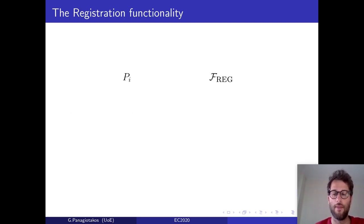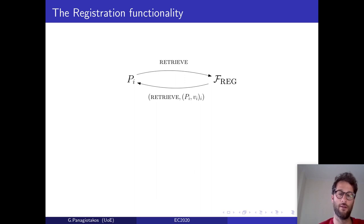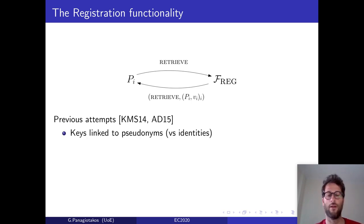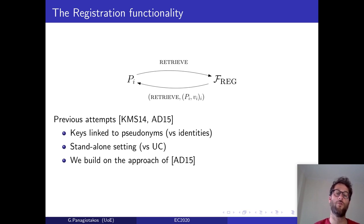Next, I'm going to talk a bit about the registration functionality. The registration functionality takes two commands. First, a submit command together with a string that each party can issue once. And when issued, the registration functionality stores the submitted string together with the identity of the party that submitted it. And secondly, a retrieve command that when issued, the registration functionality response contains a list of identities and registered strings. Now, there have been some previous attempts to implement this functionality. The first one by Katz, Miller, and Shi in 2014, and the second one by Andrychowicz and Dziembowski in 2015. Unfortunately, these attempts are not good for our goal. First, because there the keys, the registered strings, are linked to pseudonyms and not to the actual identities of the parties. And secondly, because the security there is in the standalone framework and not in the UC one.